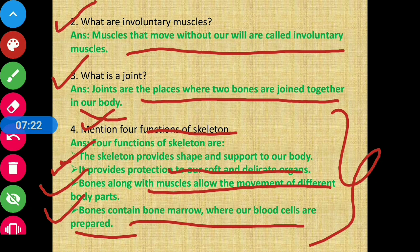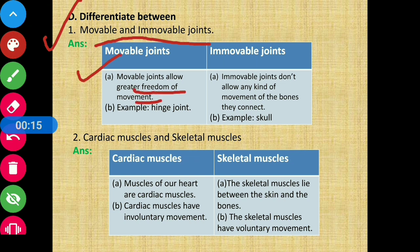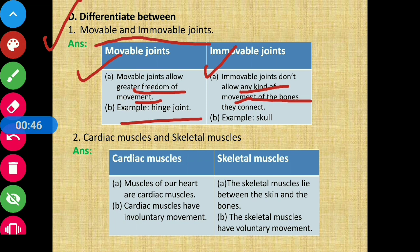Moving on to section D, differentiate between. First question: movable and immovable joints. Movable joints allow greater freedom of movement for our body. On the other hand, immovable joints don't allow any kind of movement of the bones. Example: hinge joint in case of movable joint, and skull in case of immovable joint.